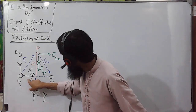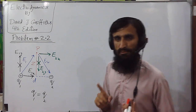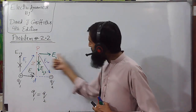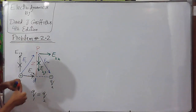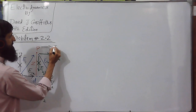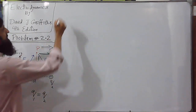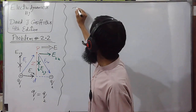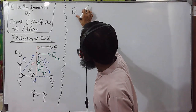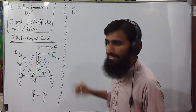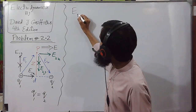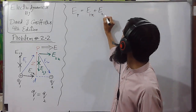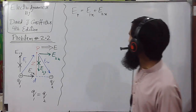The x-components E1x and E2x both point to the right, so the net electric field at point P due to these two charges will be towards the right. The magnitude of this net electric field is equal to the sum of the x-components: E_net = E1x + E2x.